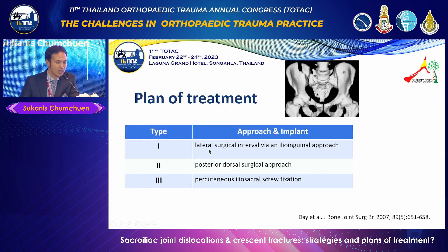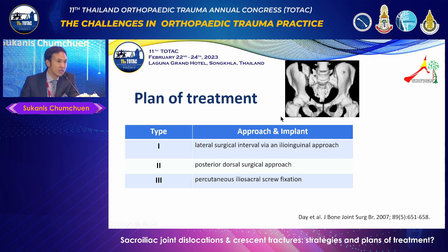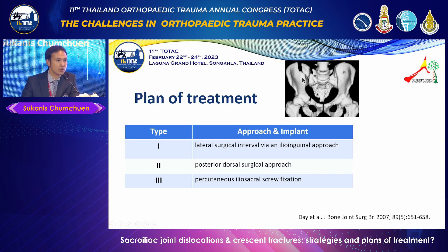They proposed that for type 1, use the anterior approach to the lateral ilioinguinal window and put plate fixation. For type 2, use the posterior approach to the outer ilioinguinal window to fix posteriorly. For type 3, only percutaneous ilioinguinal screw fixation is enough, because there is a very large iliac fragment, so we can put the SI screw and treat it as an SI joint dislocation.